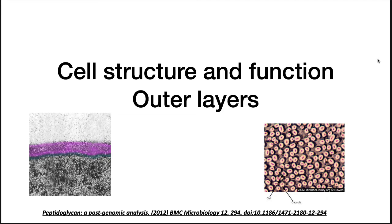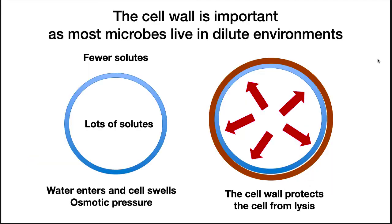We now move on to the layers outside the membrane. As most microbes live in dilute environments, a cell wall is important for survival. Without a cell wall, the cell would burst. The cell wall helps keep the membrane and the rest of the cell together.